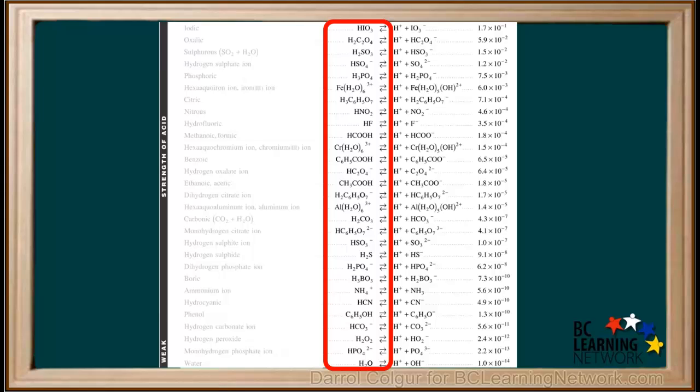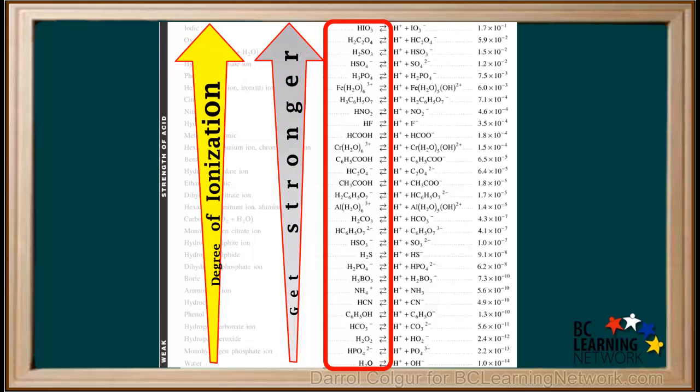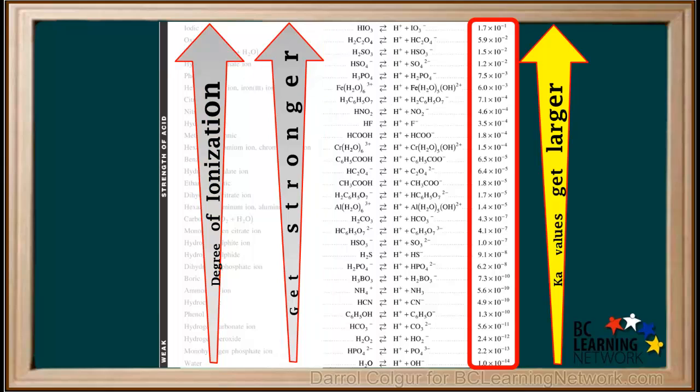Of course, we can also say that weak acids progressively get stronger as we move up on the left side, from water at the bottom to HIO3 at the top. This means the degree of ionization increases as we move up, and again, this is reflected by the increase in Ka values as we move up.